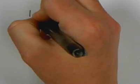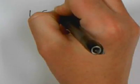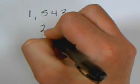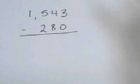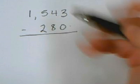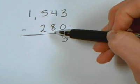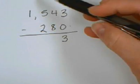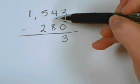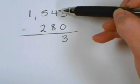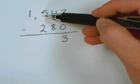In this problem, if I have 1,543 minus 280, 3 minus 0 is 3, and now we get to the tens column and we cannot subtract. So just because I'm starting at the tens place doesn't mean I do things any differently. I can't take 8 from 4, so I go next door.